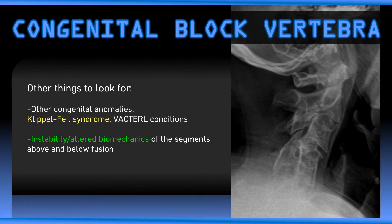A few other things to look for: whenever you see a congenital anomaly, always look for other congenital anomalies. Conditions such as Klippel-Feil syndrome or other congenital conditions can be associated with congenital blocks. Because of the fused segment, you're going to have a higher probability for instability or altered biomechanics at the segments above and below the fusion, because those segments have to compensate for the loss of biomechanical function. Flexion and extension or stress studies can often be helpful for excluding instability when congenital blocks are present.